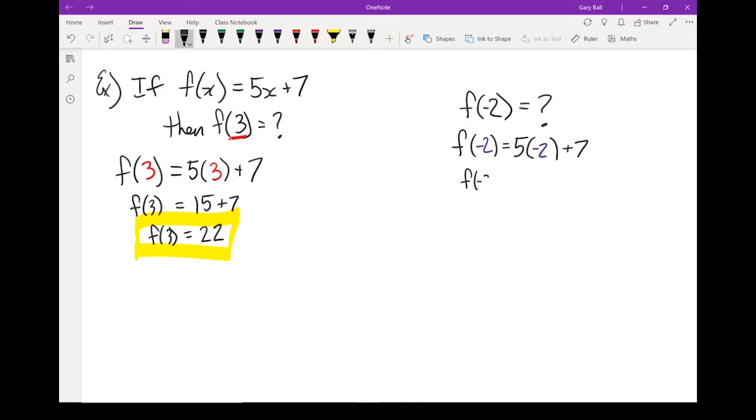So f(-2) equals 5 times negative 2 gives me negative 10 plus 7. f(-2) equals negative 3. So my function of negative 2 equals negative 3.